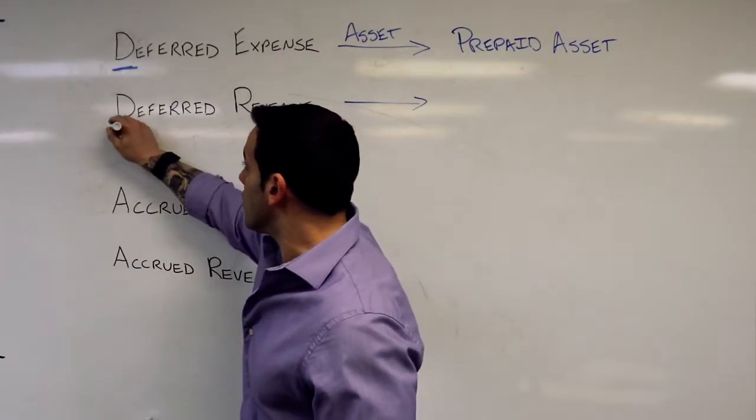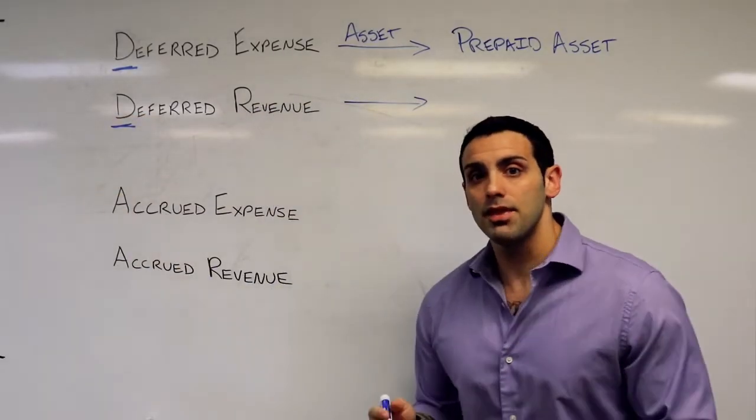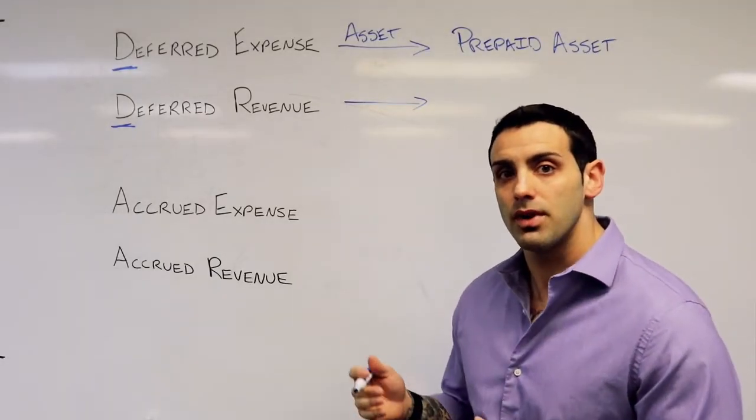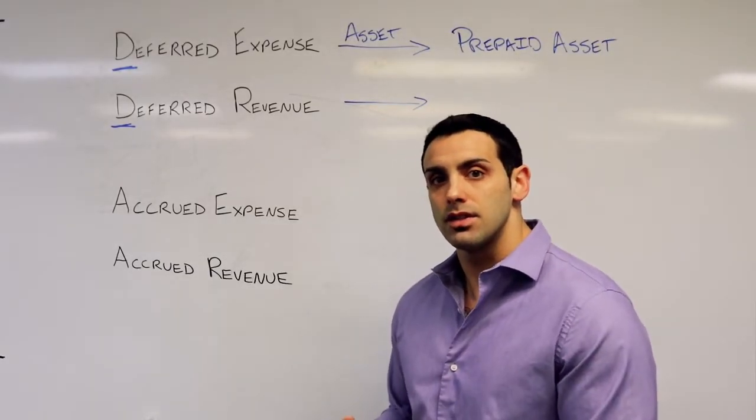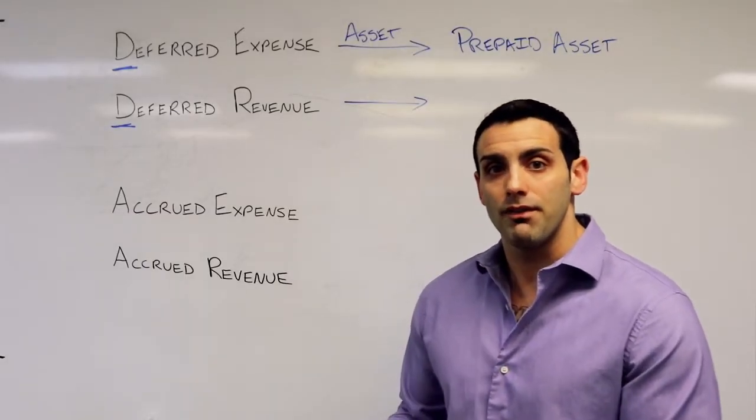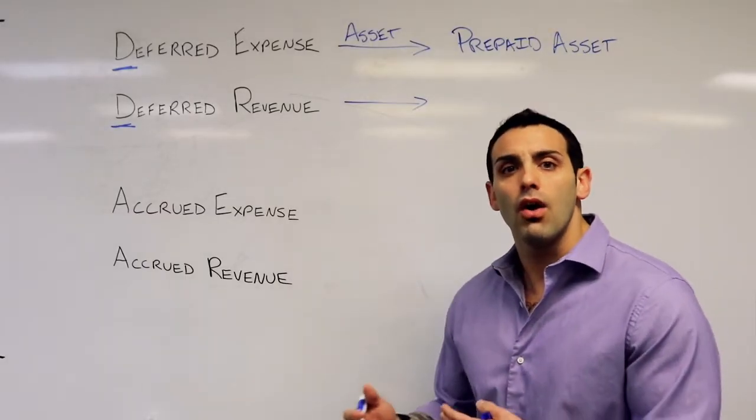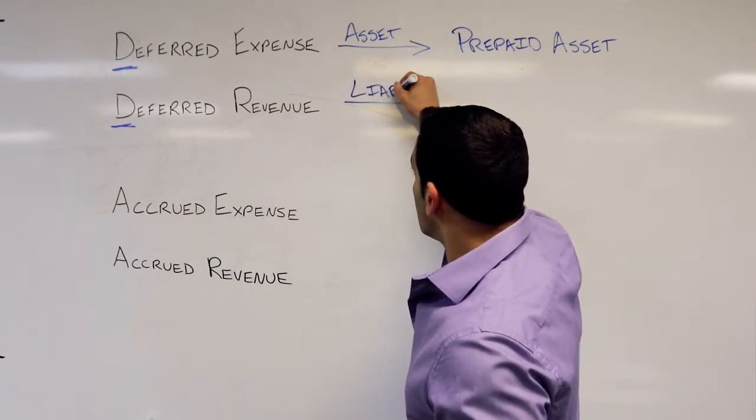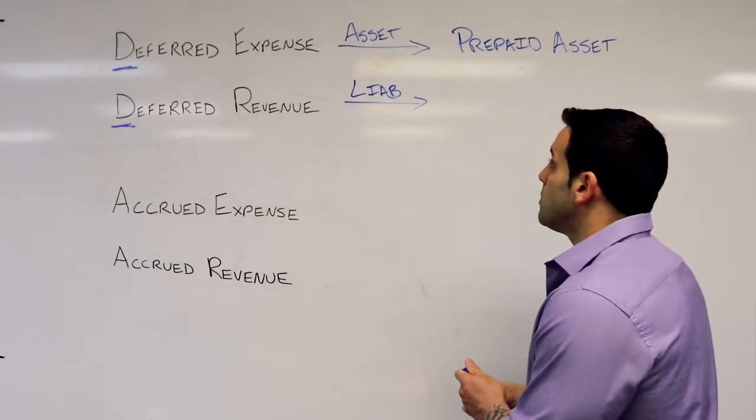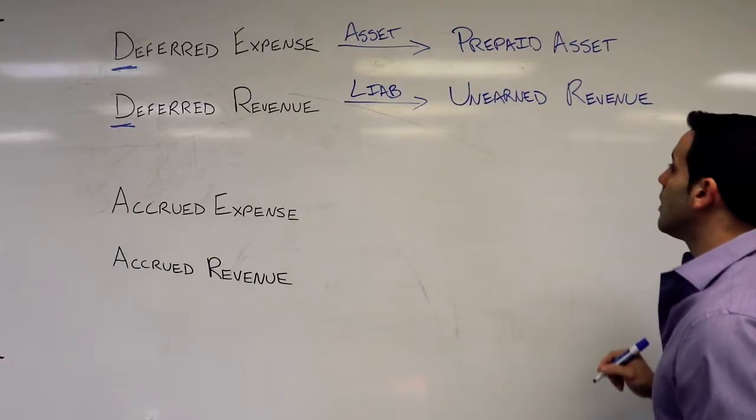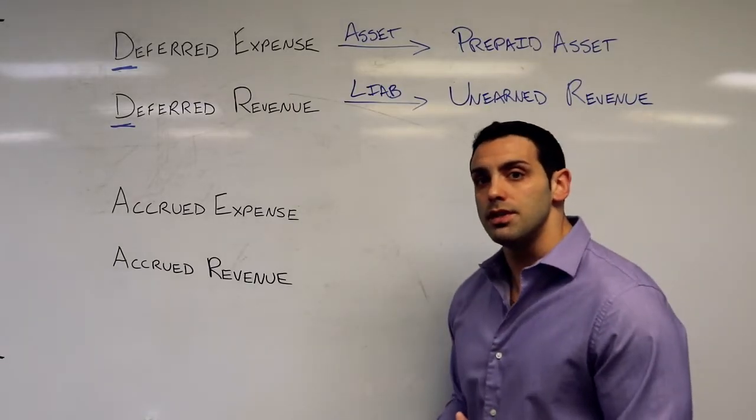Next, we have deferred revenue. Same thing—think dollars before action. If we receive dollars before the action of earning the revenue, that means we owe our clients. This is going to be a liability, unearned revenue.